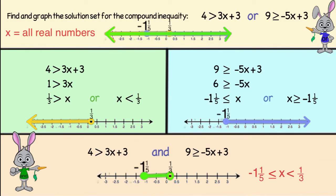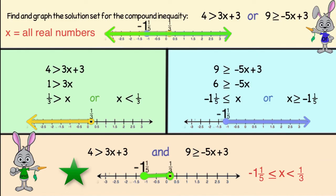When you're solving compound inequalities, you first solve and graph each inequality separately. Then if the problem says 'or', only one of the inequalities needs to be true and the solution can be found by merging the two graphs. And if the problem says 'and', then both inequalities need to be true, so the solution set only includes where the two graphs overlap.